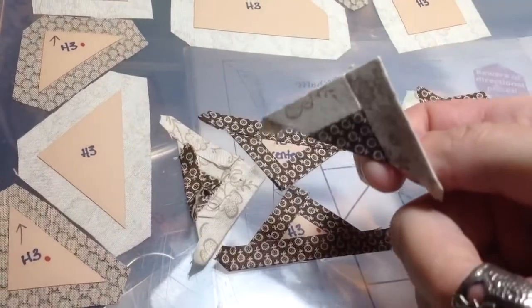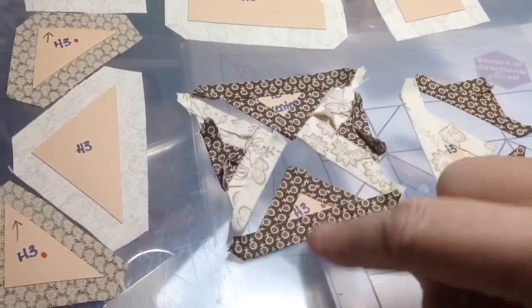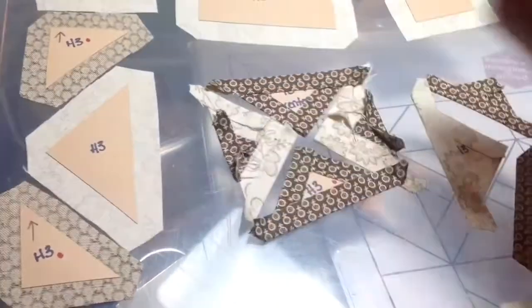So I've got my triangles pieced for the middle, and I'm going to attach them to the solids and make my square.